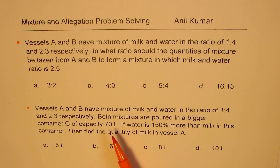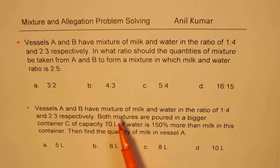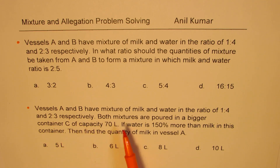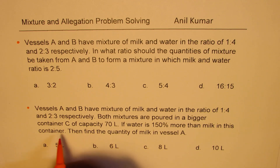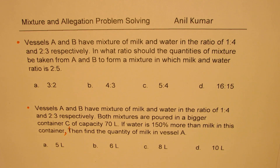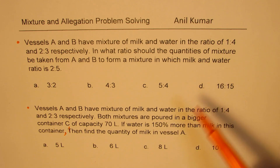The same question can be asked in a slightly different way. The related question is: vessels A and B have mixture of milk and water in the ratio of 1 to 4 and 2 to 3 respectively. Both mixtures are poured in a bigger container C of capacity 70 liters. If water is 150% more than milk in this container, then find the quantity of milk in vessel A. This test problem should be solved within a few minutes. We'll first apply the standard method, then learn the trick and use it to solve question 2.